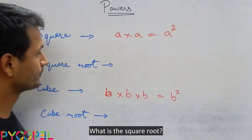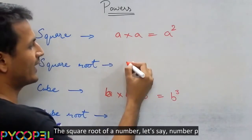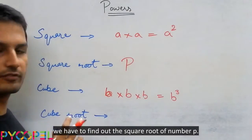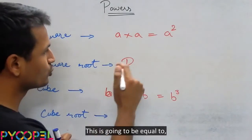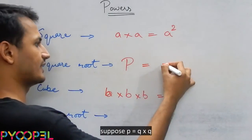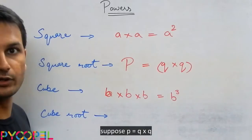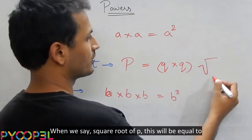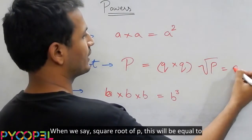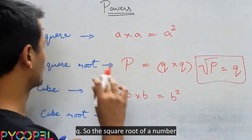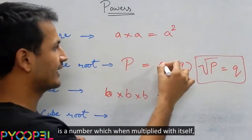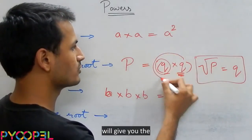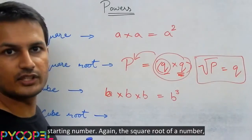What is the square root? The square root of a number — let's say the number P — we have to find the square root of number P. This is going to be equal to some value. Suppose P is equal to Q squared. Then this is how we represent square root. So when we say square root of P, this will be equal to Q. The square root of a number is a number which, when multiplied with itself, will give you the starting number.